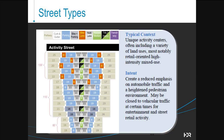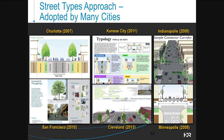The street types approach is not something new — it's been adopted by many cities across the U.S. Images of the application of varying street types to context-sensitive development are illustrated across multiple cities: Charlotte, Kansas City, Indianapolis, Minneapolis, Cleveland, and San Francisco. All those communities have an approach that considers design flexibility for sensitivity to adjacent land uses.